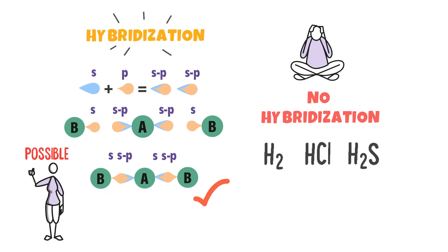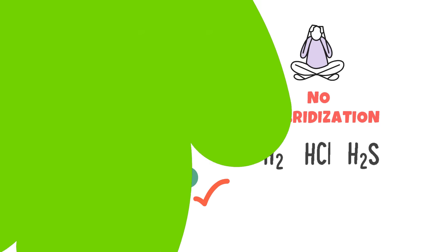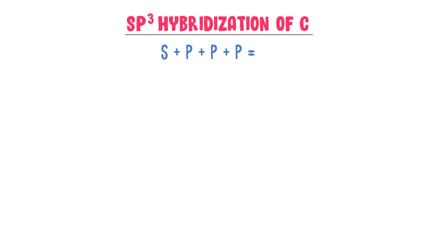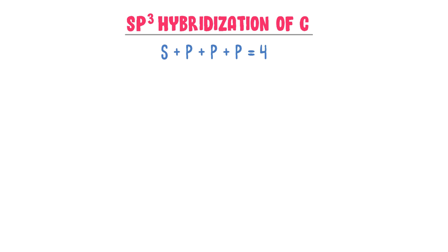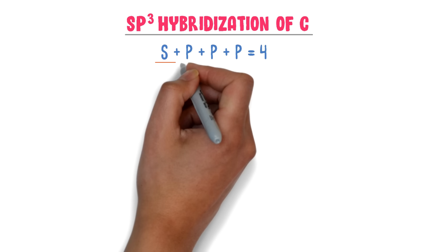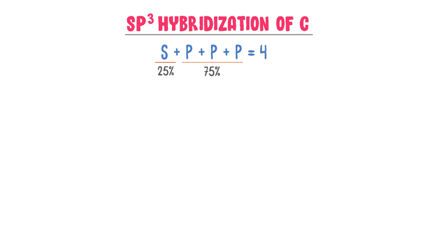Now let me explain the hybridization of atomic orbitals of carbon. Firstly, SP3 hybridization of a carbon atom. SP3 hybridization means that in this mixture of atomic orbitals there is one S orbital and three P orbitals, so there are four orbitals total present in SP3 hybridization. There is 25% S character and 75% P character in SP3 hybridization.